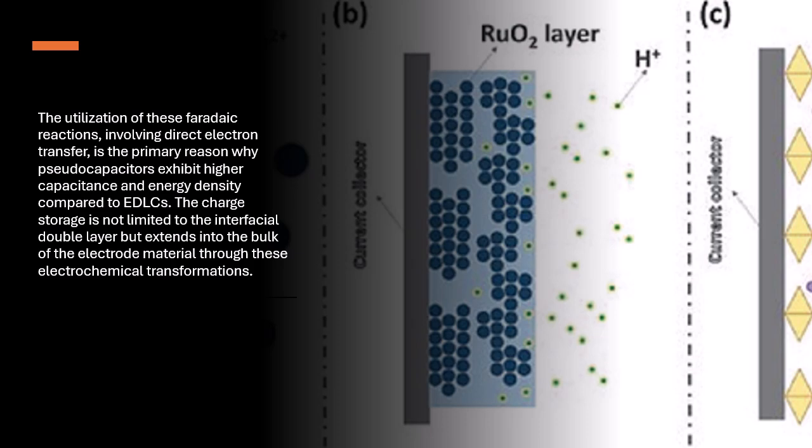The utilization of these Faraday reactions involving direct electron transfer is the primary reason why pseudo-capacitors exhibit higher capacitance and energy density compared to EDLCs. The charge storage is not limited to the interfacial double layer but extends into the bulk of the electrode material through these electrochemical transformations.